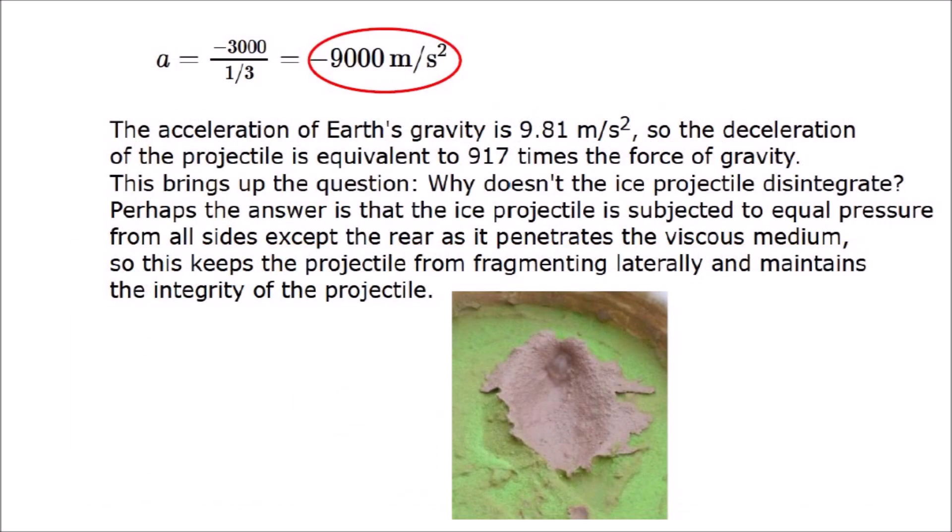The acceleration of Earth's gravity is 9.81 meters per second squared, so the deceleration of the projectile is equivalent to 917 times the force of gravity. This brings up the question, why doesn't the ice projectile disintegrate? Perhaps the answer is that the ice projectile is subjected to equal pressure from all sides except the rear as it penetrates the viscous medium, so this keeps the projectile from fragmenting laterally and maintains the integrity of the projectile. This is a subject that needs to be researched further.